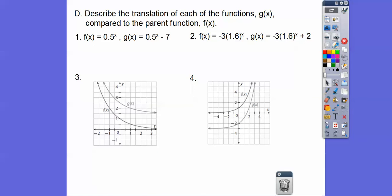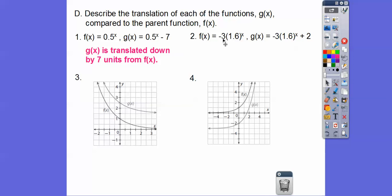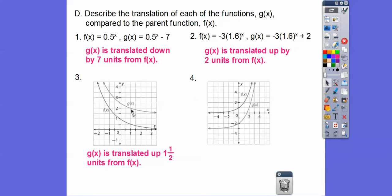For translations, that's the plus k part of the function. Here, the minus 7 means g of x is translated down by 7, with the same base 0.5 to the x. In another example, 'a' and 'b' are the same, so it's translated up by 2. When given a graph, look at the y-intercepts to see how much it moved. One example went up 1 and a half units, and another got translated down 3 units.